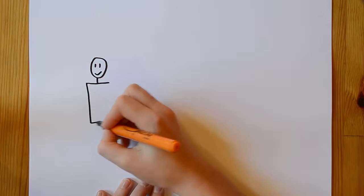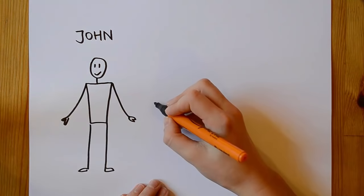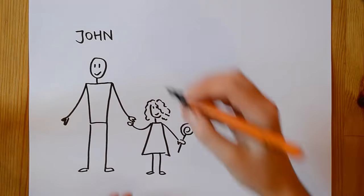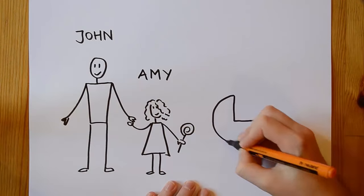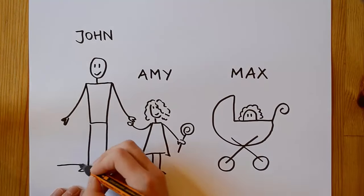This is John. John is the first born child. He has a sister, her name is Amy. She is the middle born. John and Amy have a little brother. His name is Max and he is the last born in this family.